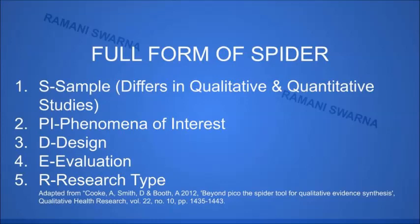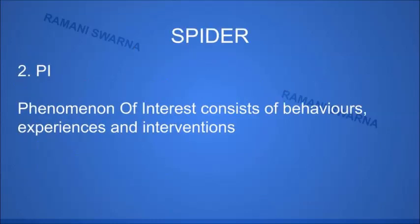The full form of SPIDER is: S stands for Sample — this differs in qualitative and quantitative studies within medicine and other schools. PI stands for Phenomena of Interest, and we will see more discussion about it. D stands for Design, E for Evaluation, and R for Research Type. You can look at the paper by Cook A, Smith D and Wood A, 2012: 'Beyond PICO: The SPIDER Tool for Qualitative Evidence Synthesis.'